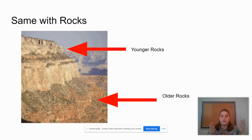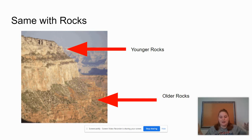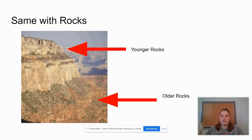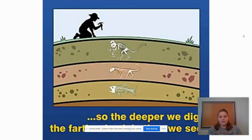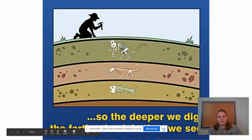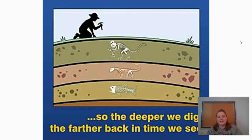Here we have a picture of the Grand Canyon. What's really cool about the Grand Canyon is that all these rocks were layered on top of each other, and then a river slowly carved through the rocks to make the canyon. If we look at the top, the very top rocks of the canyon are the youngest, and the rocks at the very bottom are going to be older. In short summary: the deeper we dig, the farther back in time we see.